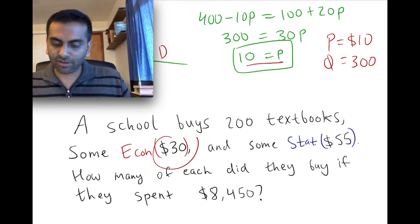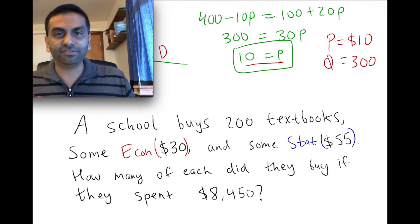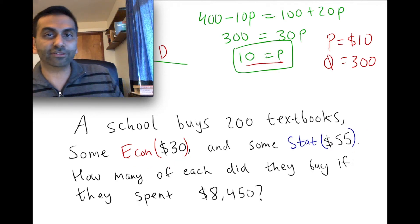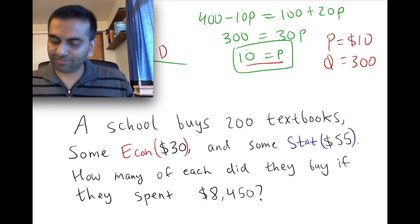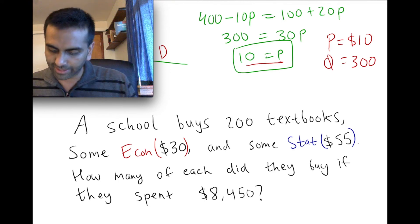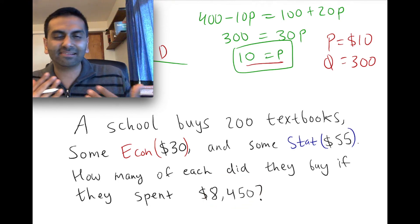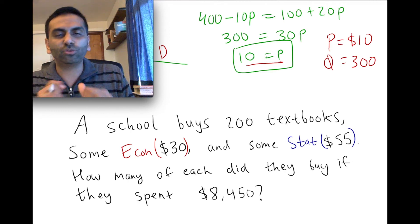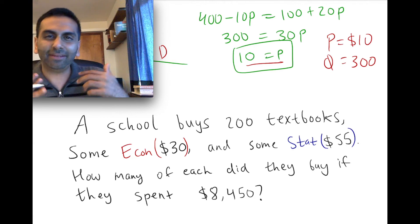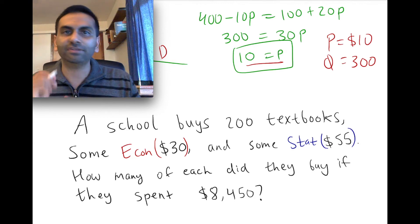And 100 times 55, that's $5,500 that you spend on stats books. And if you add them up, that's pretty close. That's $3,000 plus $5,500 is $8,500. That's pretty close to this guy. So we kind of already know just by guessing and checking the answer is kind of close to 100 of each. And they would just guess and check and tweak until they get the right number. Now, that's a very inefficient way to do it, especially if the numbers aren't so pretty and if you have decimals and stuff.